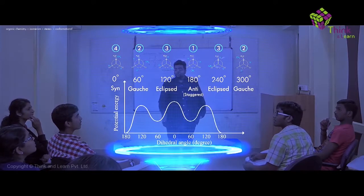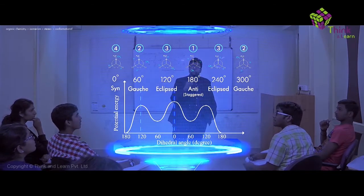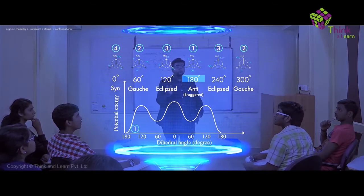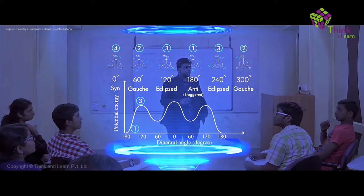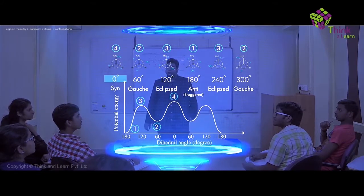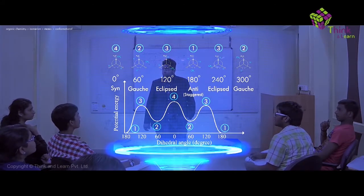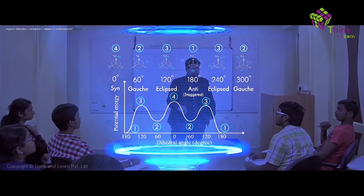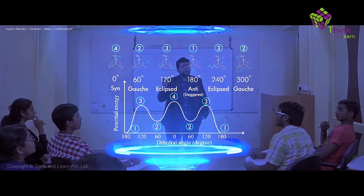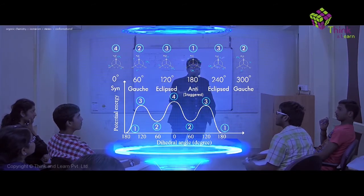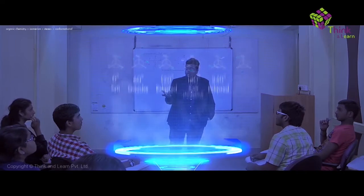Now, similar to what we have done before, let's plot the energy graph. The graph has two peaks because we had two conformations that were similar. It starts from the bottom — anti — moves to the top, comes back to the bottom, goes to the top again, and finally returns to the bottom. This is how the five conformations are placed for butane. Once you understand butane's conformations, drawing conformations for any molecule becomes easy — just focus on two carbons and treat everything else as a substitution.